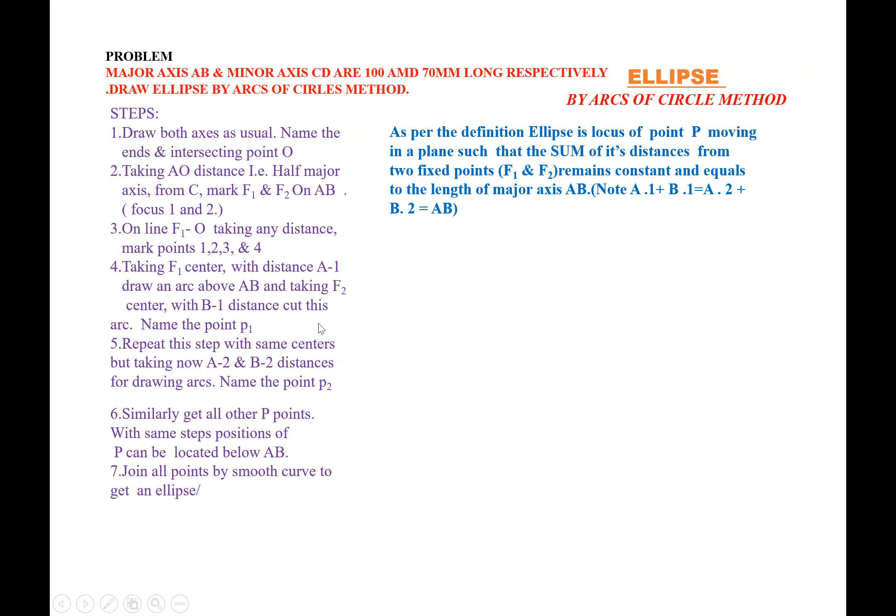Let's look at the definition. As per the definition, ellipse is a locus of points if moving in a plane such that sum of its distances from two fixed points F1 and F2 are constant and equals to the length of major axis. F1 and F2 are fixed points, the foci.